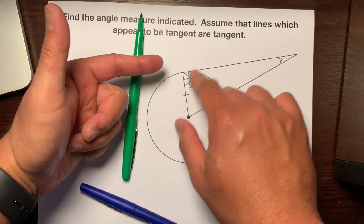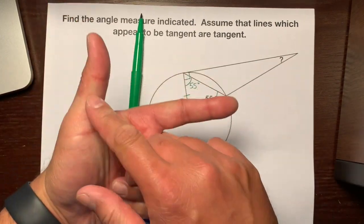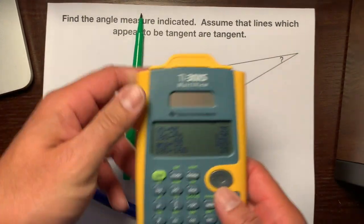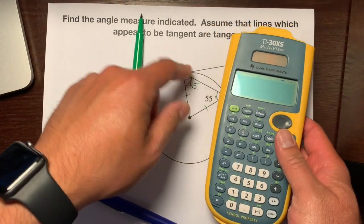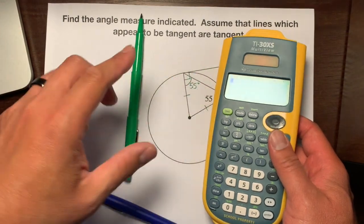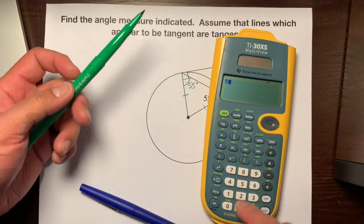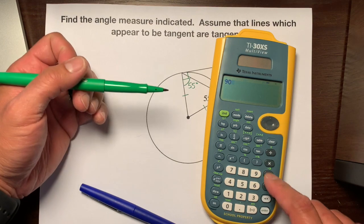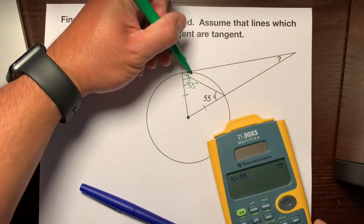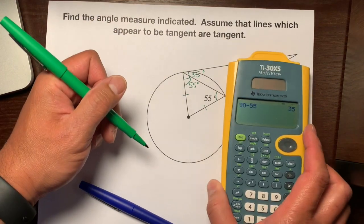These two angles add up to make a right angle — they add up to make 90 degrees — so they're complementary. To find this angle, we're going to take our calculator, take the 90 and subtract 55 from it. That makes this angle 35 degrees.